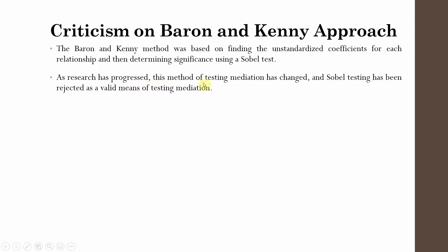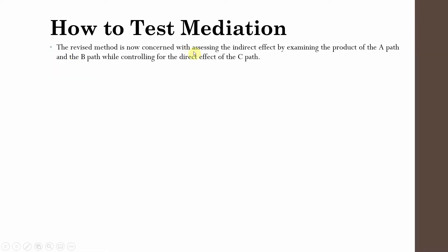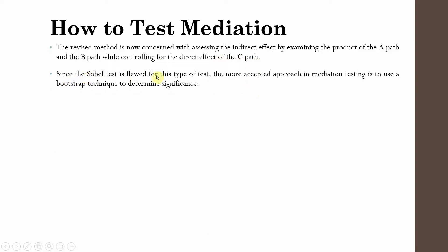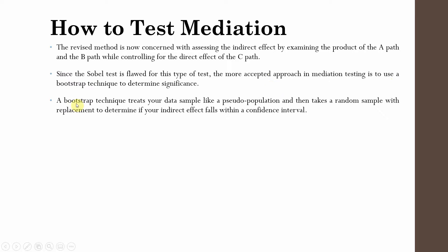As the research has progressed, this method of testing mediation has changed and the Sobel test has been rejected as a valid means of testing mediation. The revised method is now concerned with assessing the indirect effect by examining the product of the A path and the B path while controlling for the direct effect of the C path. Since the Sobel test is flawed, the more accepted approach is to use a bootstrap technique to determine significance.